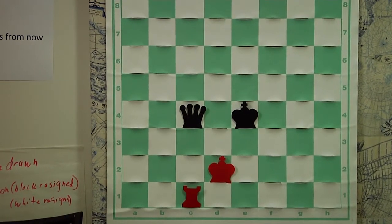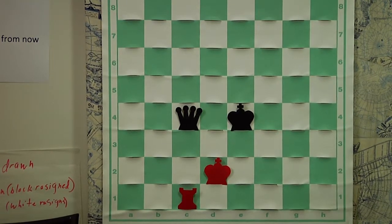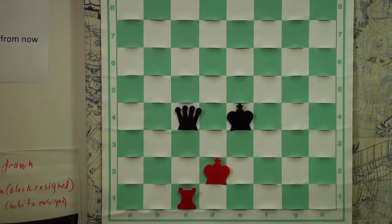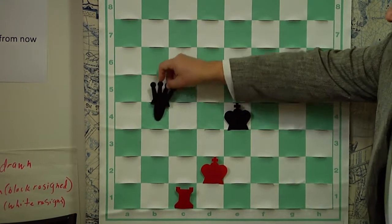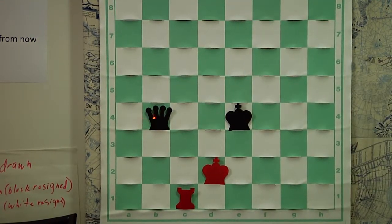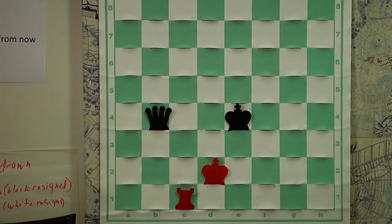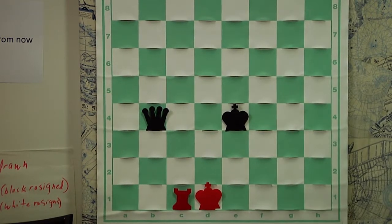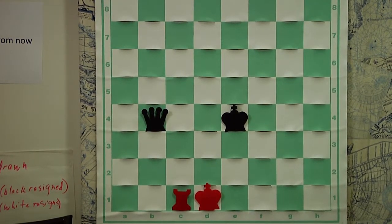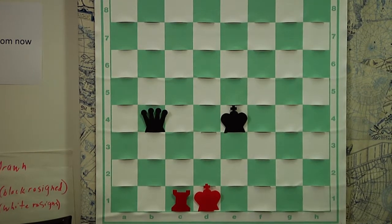Check is when a king is under attack. There are three things you can do to get out of check when your king is under attack. Let's take a look at them. The first thing you can do when, for example, this queen has checked the king here on the diagonal, you can attempt to run the king away. This is the most common answer to check among beginners, but not necessarily always the best. There are other options.